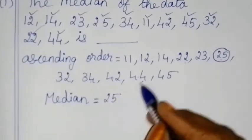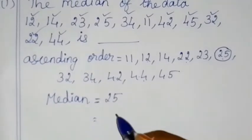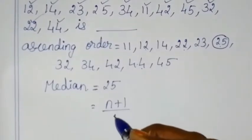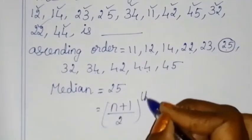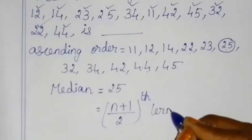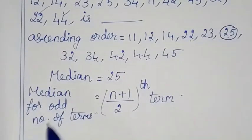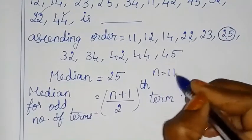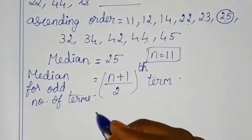The formula for number of terms is n plus 1 by 2. So median is equal to the (n+1)/2 th term. This formula applies for odd number of terms. With 11 terms — an odd number — we use this formula.